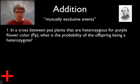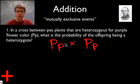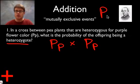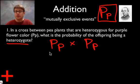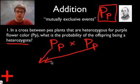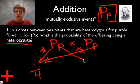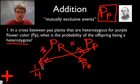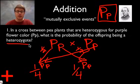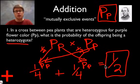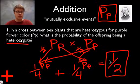Now let's apply addition to genetics. In a cross between pea plants that are heterozygous for purple (Pp x Pp), what are the odds that the offspring will be heterozygous? We can build the heterozygous offspring in two ways: the first parent gives the big P and the second gives the little p — that's a 1/2 × 1/2 = 1 in 4 probability. Or, the first parent gives its little p and the second gives its big P — that's also 1 in 4. Since we can build it in two ways, we add them: 1/4 + 1/4 = 1/2. A Punnett square visually shows you that, but with the rules of addition you don't have to do all that work.